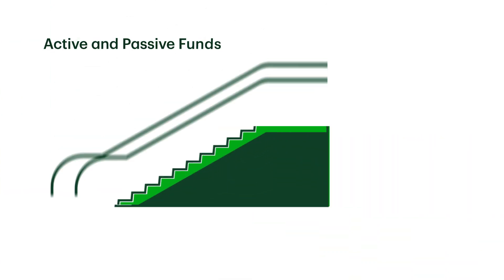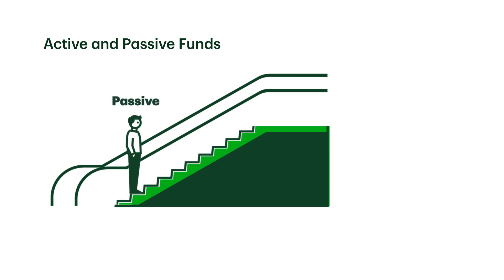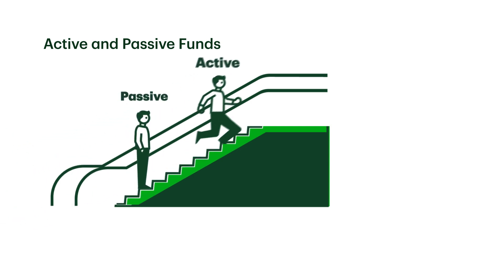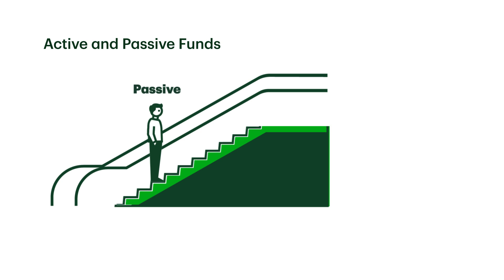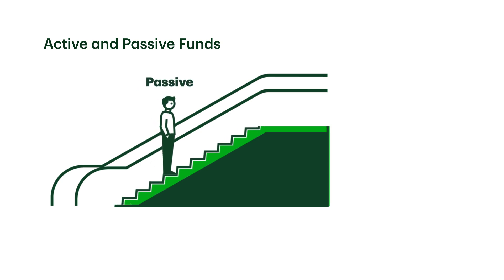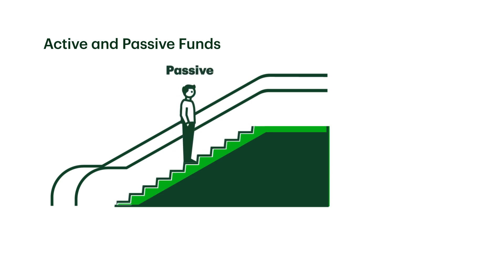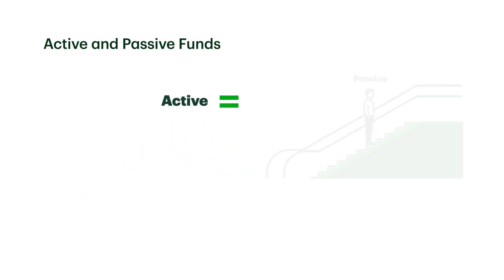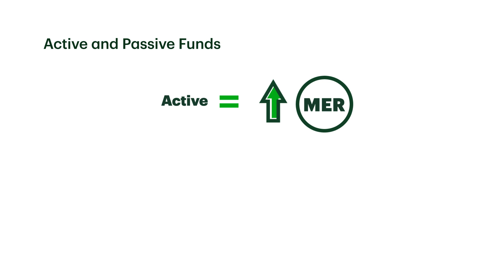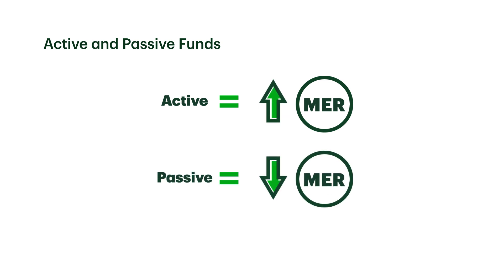Funds can be divided into two general categories: active or passive. Think of this as the approach the fund manager takes when making investment decisions. An active fund manager will try to outperform the returns of the market, which involves a lot of research and analysis — because of this, the MER is generally higher. A passive fund manager, on the other hand, tries to match the returns of the index that the fund tracks. Because there's minimal research and analysis involved, the MER is generally lower.